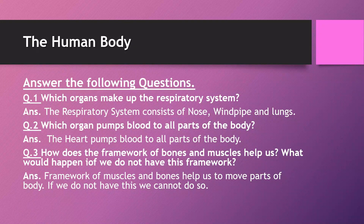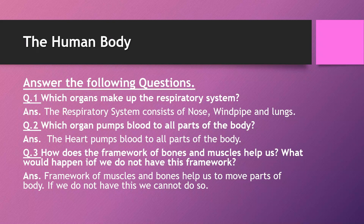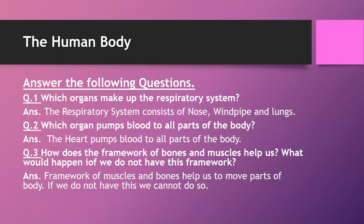Here we have the questions related to our chapter, which is the human body. The first question is: which organs make up the respiratory system? The respiratory system consists of the nose, windpipe, and lungs. So there are three main organs which make up the respiratory system.